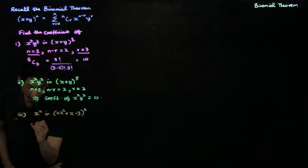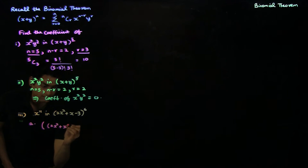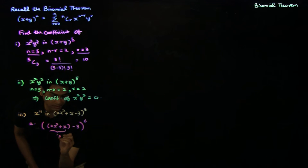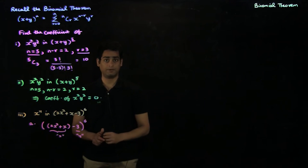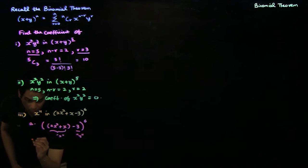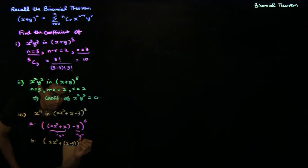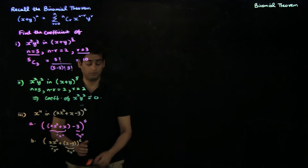The first approach: take (2x² + x − 3)^6 and consider (2x² + x) as your x and (−3) as your y in the binomial expansion of (x − y)^n. The second approach: consider (2x²) as your x and (x − 3) as your y, and write out the binomial expansion of (x + y)^n to find the coefficient of x^11.